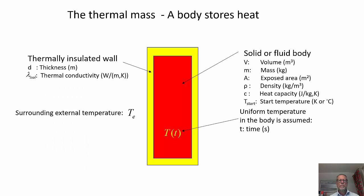This picture shows the problem we are looking at. It's a body that stores heat and it's thermally insulated in the surroundings. The red area symbolizes the solid or the fluid body which has a volume V, a mass M, an exposed area A, density ρ, C is the heat capacity and the starting temperature.